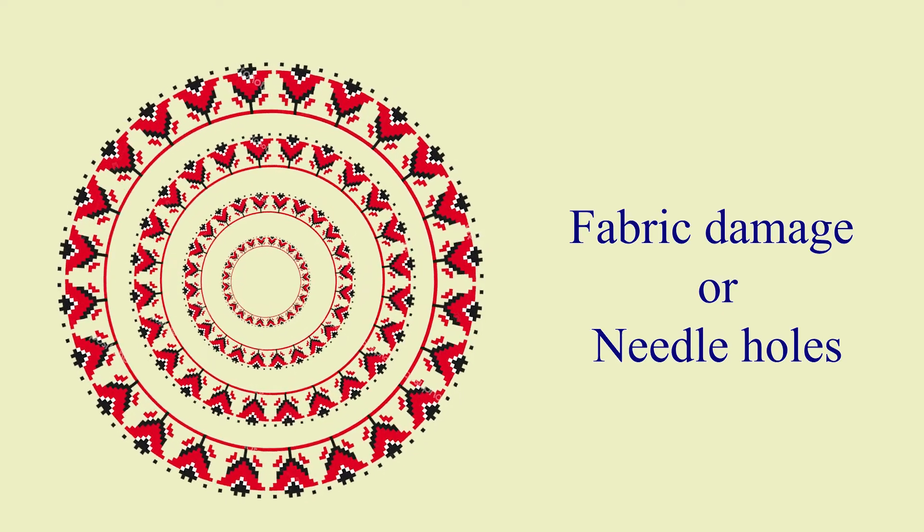Fabric damage or needle holes: Delicate fabrics like chiffon, organza, net, etc. are specially prone to fabric damage or needle holes. If the fabric tension is too tight or if a thicker needle is used for such delicate fabrics, then they may develop permanent holes or may even tear by repeated coming of the needle. To prevent and rectify this defect, use the correct type and size of needle. Do not use a very thick needle or thread for sheer and delicate fabrics. Do not add a lot of stitches on the same spot and do not fill the stitches too tightly at the same spot.